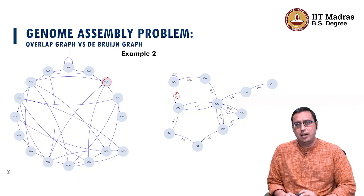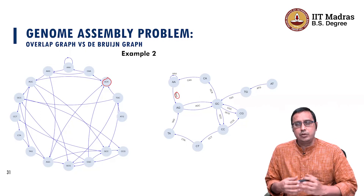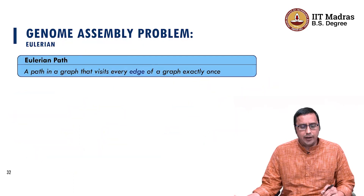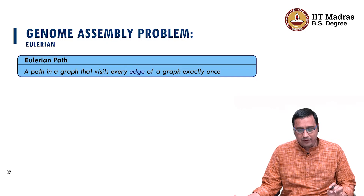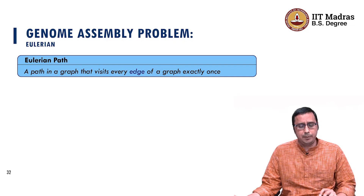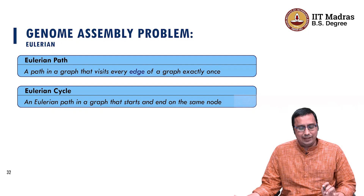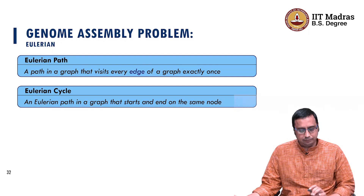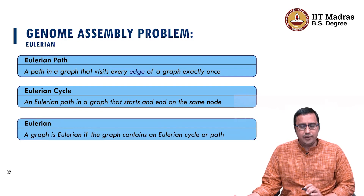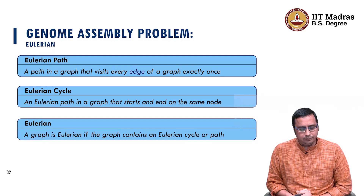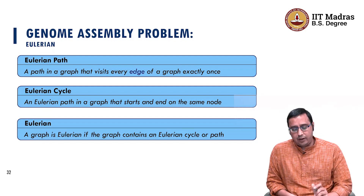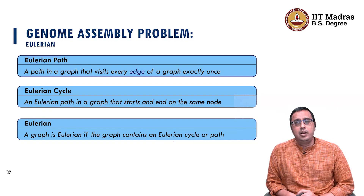Can we use this graph for genome assembly? The Eulerian path is a path in a graph that visits every edge exactly once. There is also the concept of an Eulerian cycle: an Eulerian cycle is an Eulerian path that starts and ends on the same node. A graph is called Eulerian if it contains an Eulerian cycle or path.